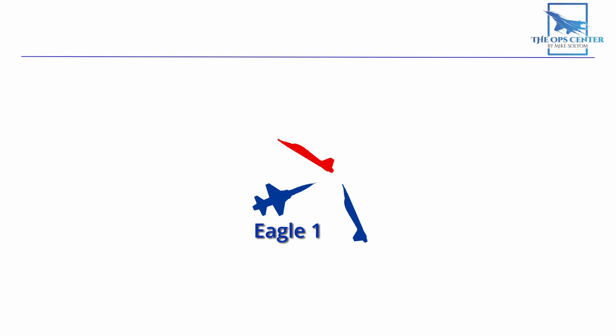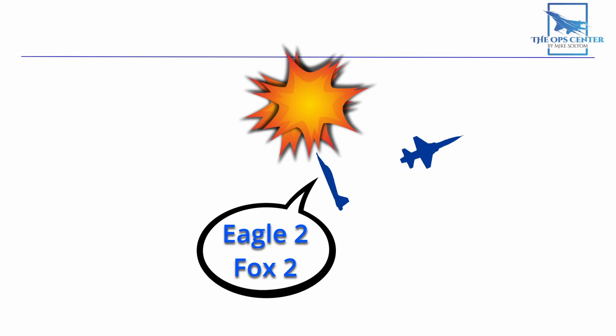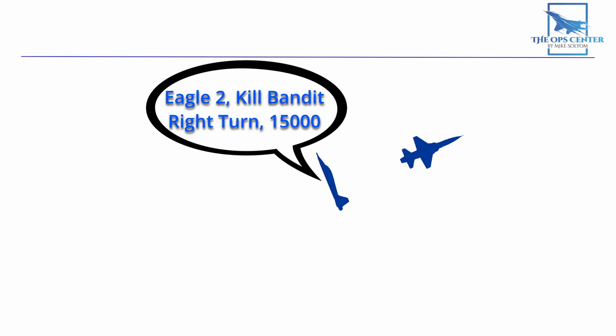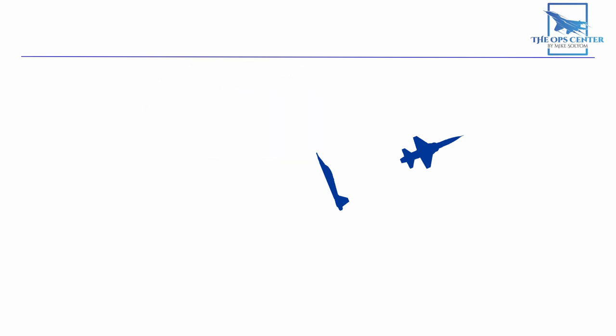But let's say the bandit chooses the one circle route. Then the wingman would get an easy rear quarter missile shot. After eagle two is assured of a clear field of fire, he would call eagle two fox two. Once the bandit is taken out, eagle two will announce it by saying eagle two kill bandit right turn fifteen thousand. That lets everybody know where the bandit was taken down. You can use other descriptive information to help pinpoint that location. This is important because there will be people on the radio net that can't see what you see. So the only way they know which bandit you fired on is through that description. Make sure it paints a clear picture for them.